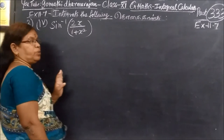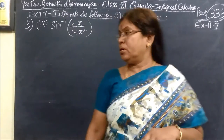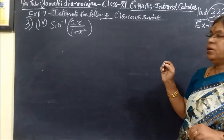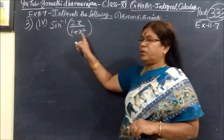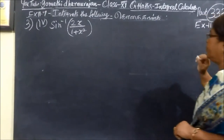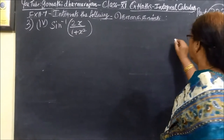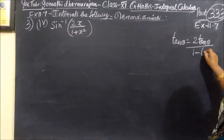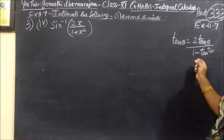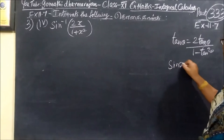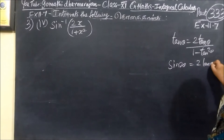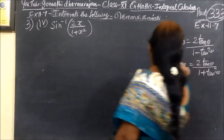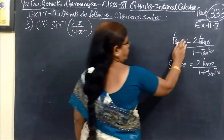So now question number 3. Remember one formula. The first formula: tan 2θ equals 2 tan θ by 1 minus tan θ. The second formula: sin 2θ equals 2 tan θ by 1 plus tan θ.